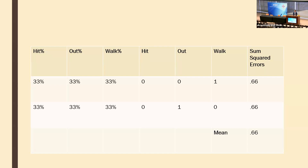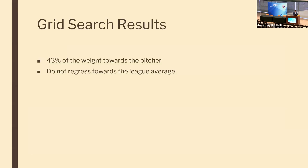I did this for every plate appearance and took the average, using whatever weights minimized that error. I also added regression to league average results — zero would represent a player's true distribution, while 50 would mean adding 50 plate appearances of league average results for the hitter or pitcher.